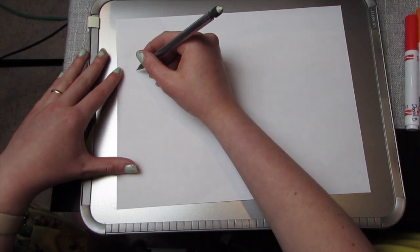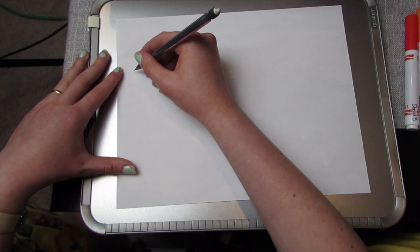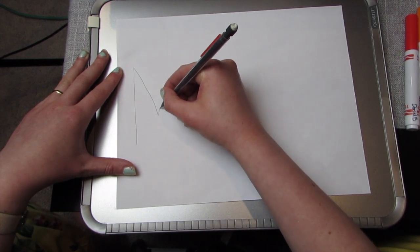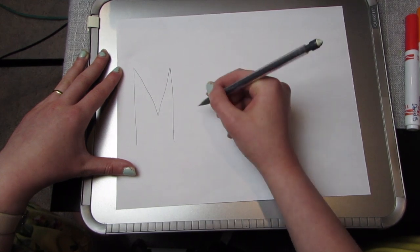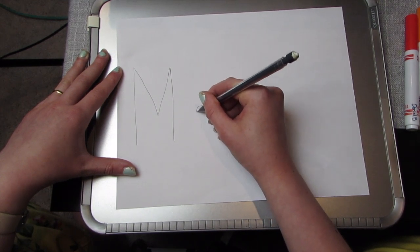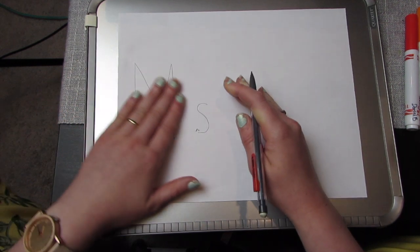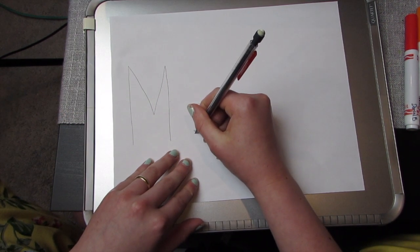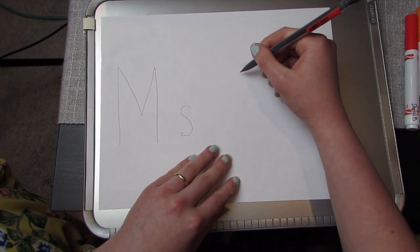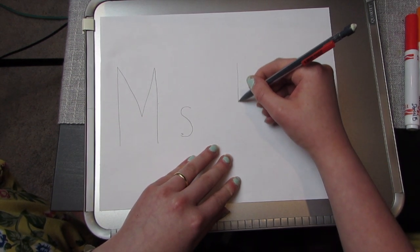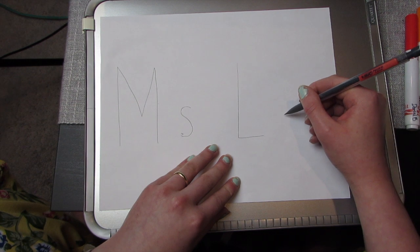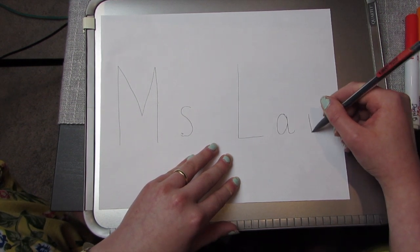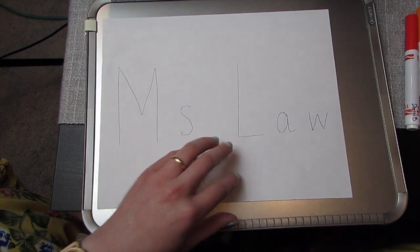So we're going to try to make sure we have lots of space between our letters. So I'm going to start on the far side of my paper, and remember that we always start from the top. So I'm going to make an M, and an S. I have an M, and then I have an S for Miss. And then Law: L, and an A, and a W. So hopefully that's going to be enough space.